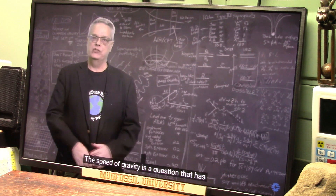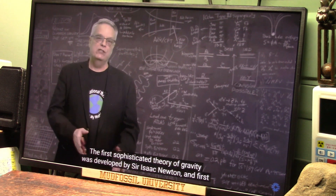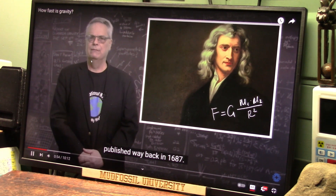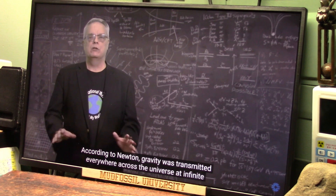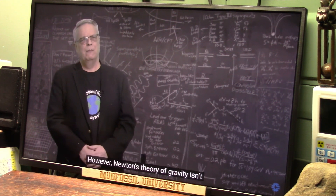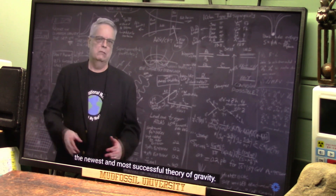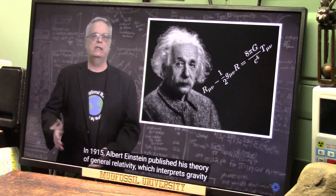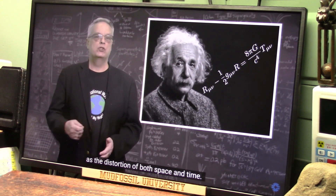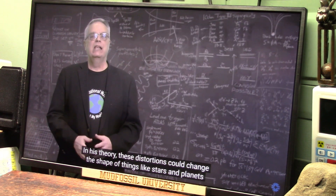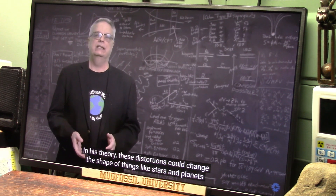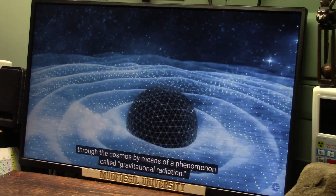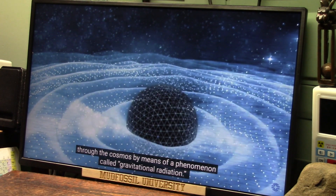The speed of gravity is a question that has puzzled scientists for centuries. The first sophisticated theory of gravity was developed by Sir Isaac Newton, first published in 1687. According to Newton, gravity was transmitted everywhere across the universe at infinite speed. In 1915, Albert Einstein published his theory of general relativity, which interprets gravity as the distortion of both space and time. These distortions could change the shape of stars and planets, and these changing distortions move through the cosmos by means of gravitational radiation.